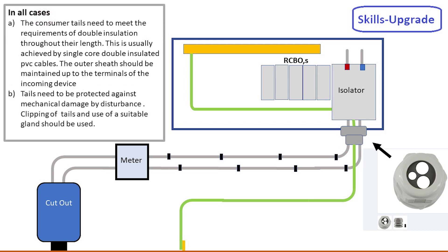In all cases, items A and B should be applied. If thought necessary, trunking could also be used to protect against mechanical damage.